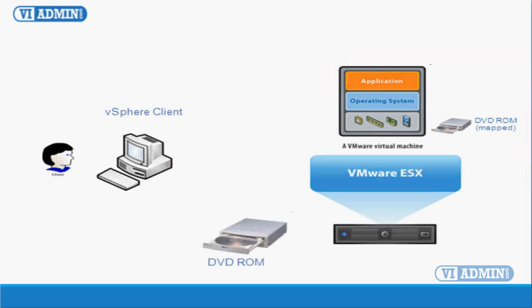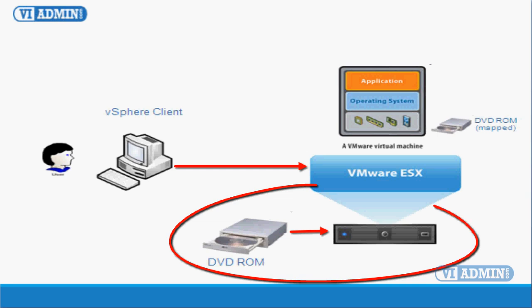The second option is to use the host device option, which could be useful if you have a physical DVD ROM in your ESX host. You can insert the DVD install media into the ESX host DVD ROM and use that device to install the OS.